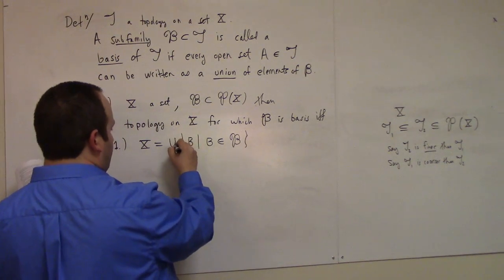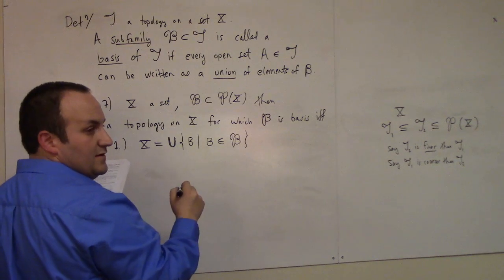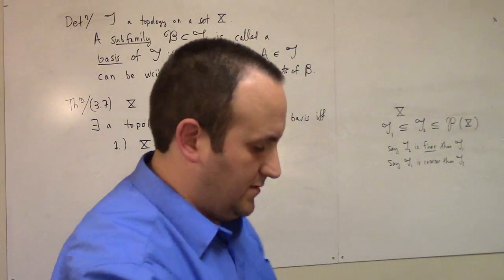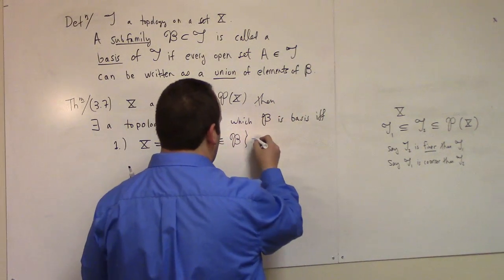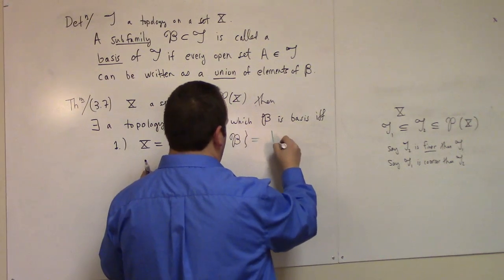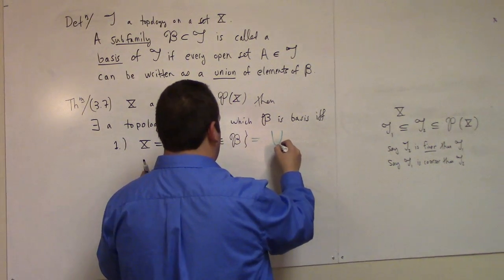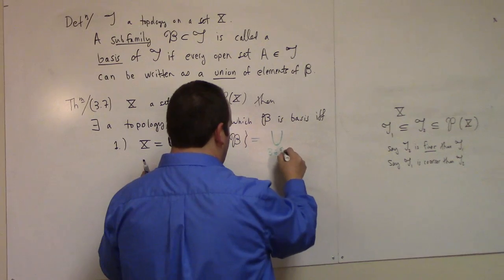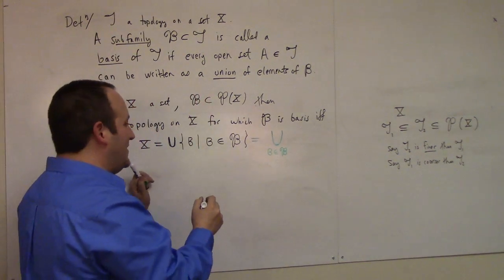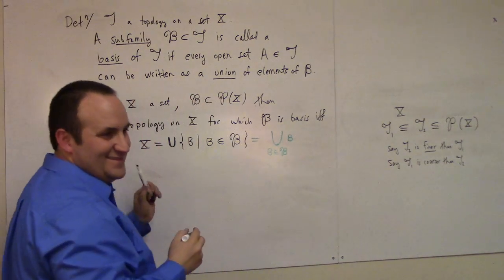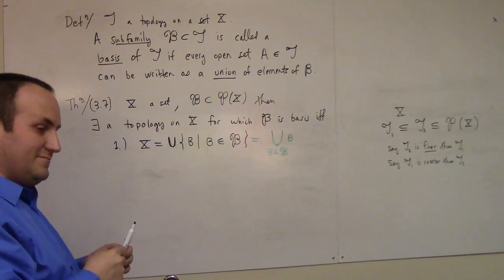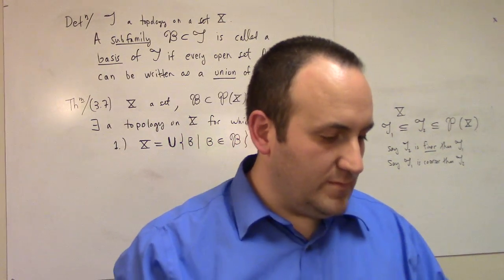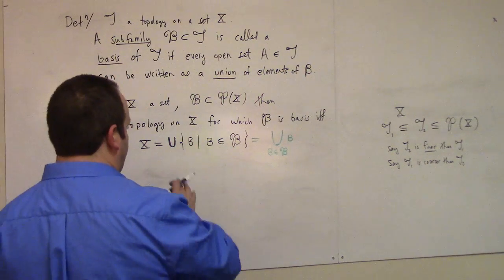This notation — the union of everything in B — is actually pretty nice. Most of what I struggled with to start was really just notation. If the union of everything in B is the whole set, it's got to cover the set. This is the covering condition.